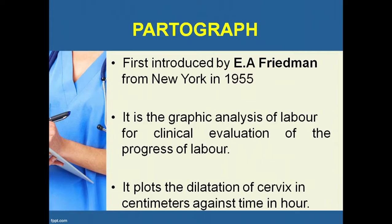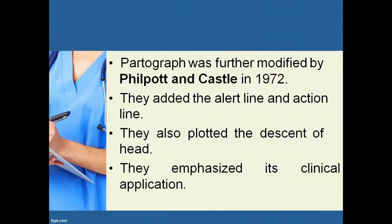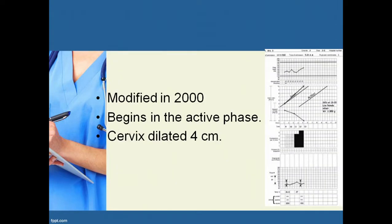The partograph was introduced by E.A. Friedman from New York in 1955. It was a graphical analysis of labor for clinical evaluation of the progress of labor, plotting the dilatation of cervix in centimeters against time in labor. It was further modified by Philpott and Cassel in 1972, who added the alert line and action line and also plotted the descent of the head, emphasizing its clinical application. Modified in 2000, it begins in the active phase at cervical dilatation of 4 cm.